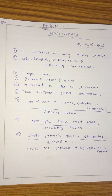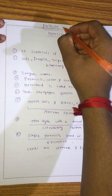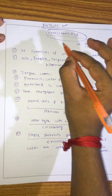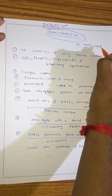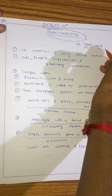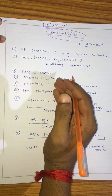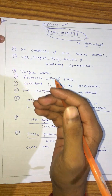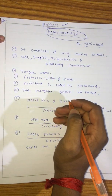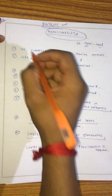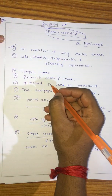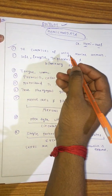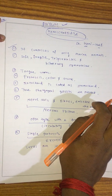Hello ladies and gentlemen. In this video I am discussing about Phylum Hemichordata. In the Greek word, 'hemi' means half. The first character of Phylum Hemichordata is that it comprises only marine animals.